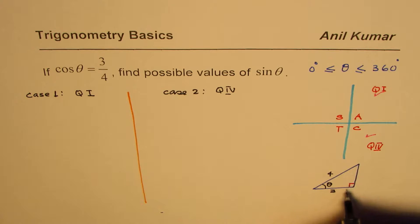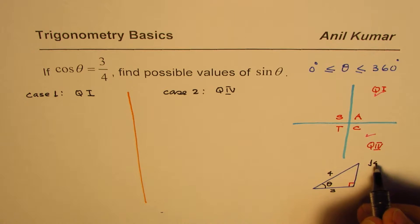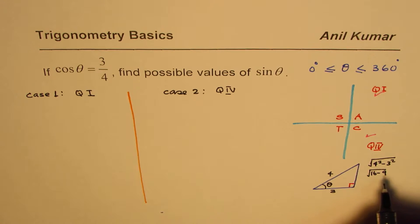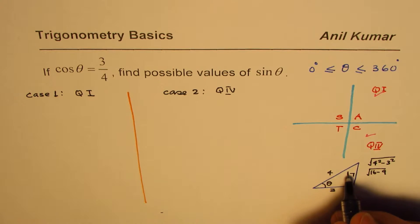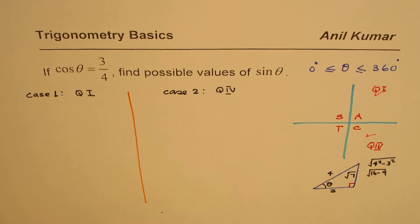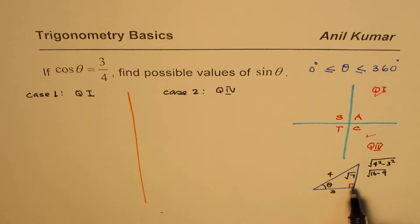Now you can find the opposite side by finding square root of 4 square minus 3 square, which is square root of 16 minus 9. 16 minus 9 is 7. So you could write this as square root 7.